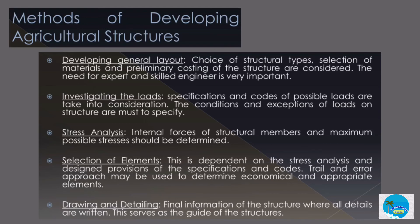Methods of developing agricultural structures. First, developing a general layout. Second, choice of structural type. Third, selection of materials and preliminary costing of the structure are considered. The need for expert and skilled engineers is very important. Fourth, investigating the loads: specifications and codes of possible loads are taken into consideration. The conditions and exceptions of loads on the structure must be specified.